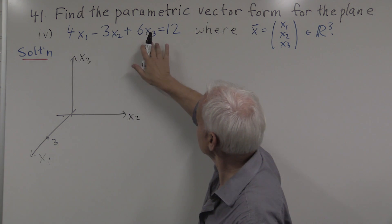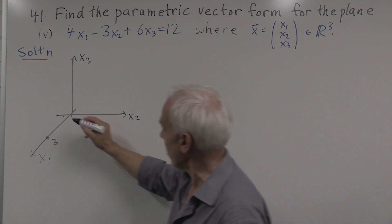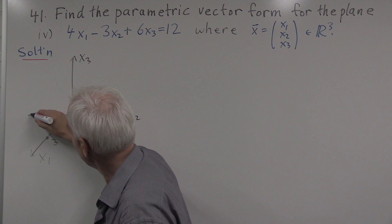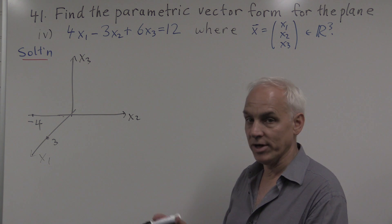Similarly, if we set x1 and x3 equal to zero, we see that the x2 coordinate would have to be minus four. It would be over here somewhere. And the plane would therefore go through that point. That would be the x2 intercept.